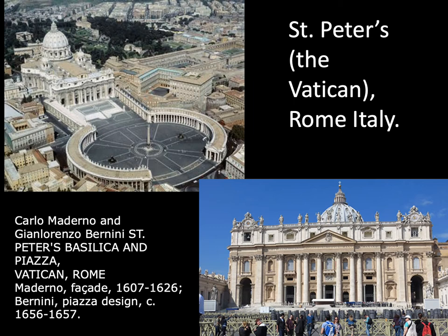The public felt that Maderno did a poor job of taking over the project. Michelangelo designed the entire floor plan; Maderno finished the facade. The public was very upset because as you walk toward the building, the dome disappears. They felt the dome was an important part of the building that needed to be seen from anywhere. The public felt this was an epic fail, and it pretty much ended Maderno's career in Italy altogether.